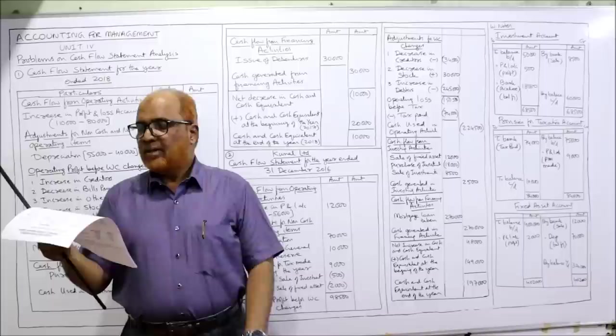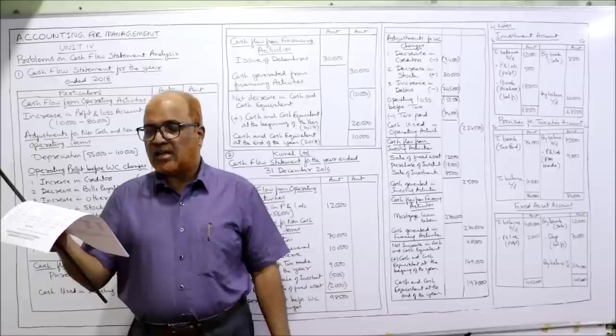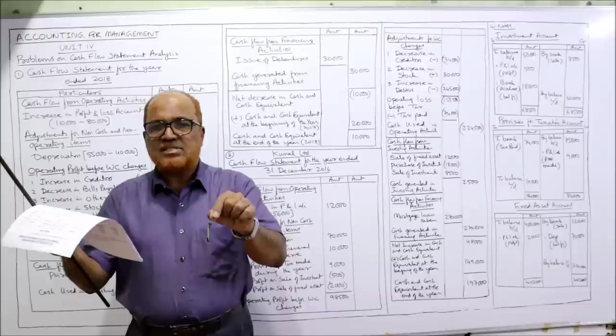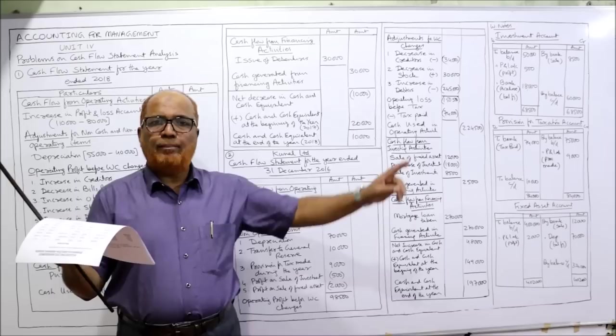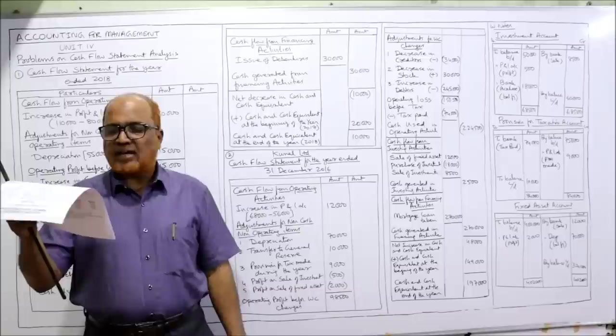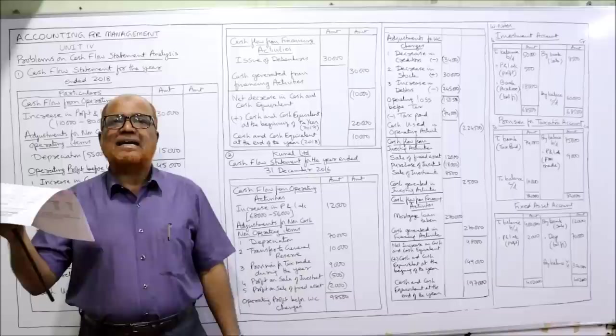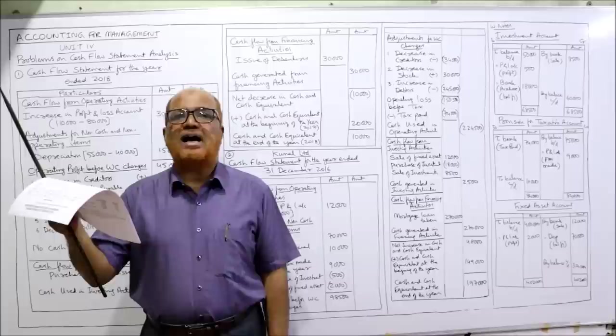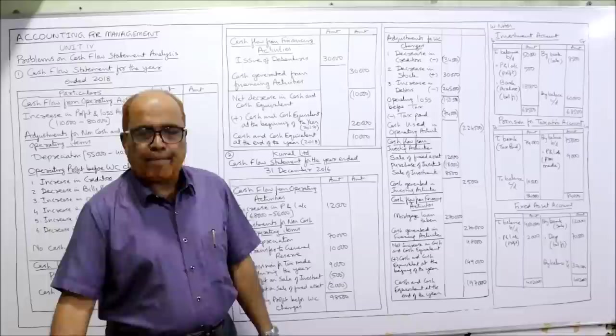Fixed assets, investment, stock, debtors, bank are given. Additional details: investment costing 8,000 was sold for 8,500. When information is given regarding investment in additional information, prepare an investment account in working notes. Tax provision made during the year: 9,000 — make a provision for taxation account. During the year part of the fixed asset costing 10,000 was sold for 12,000, with the profit included in P&L — make a fixed asset account.